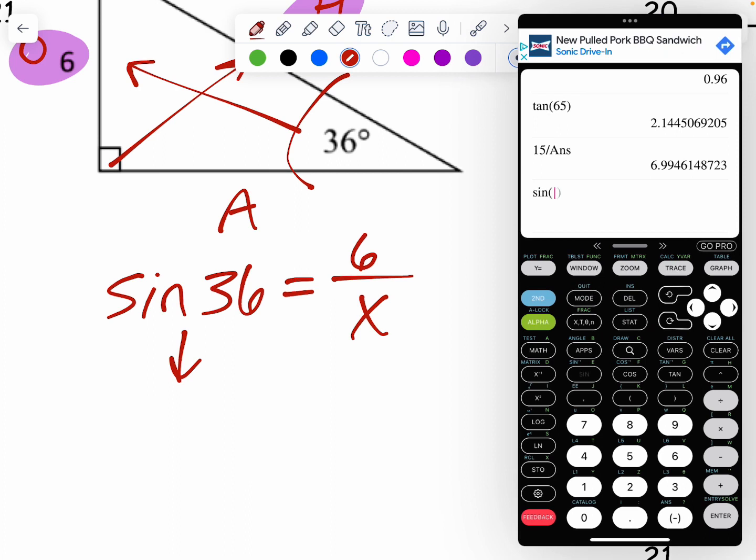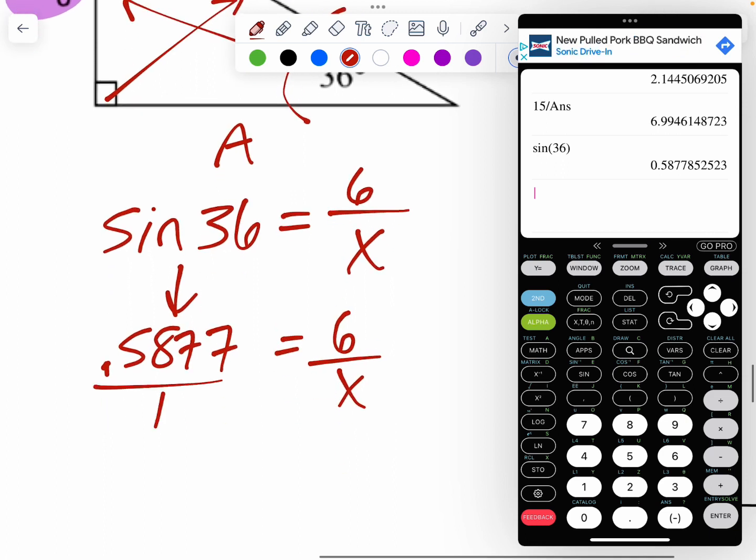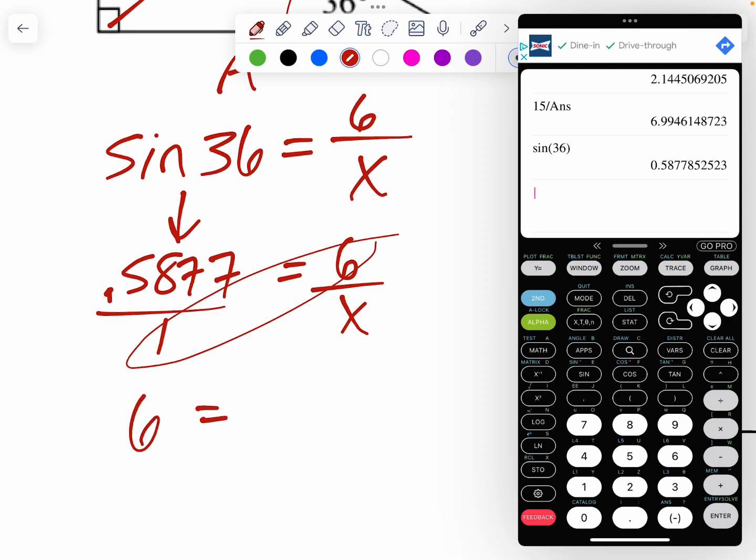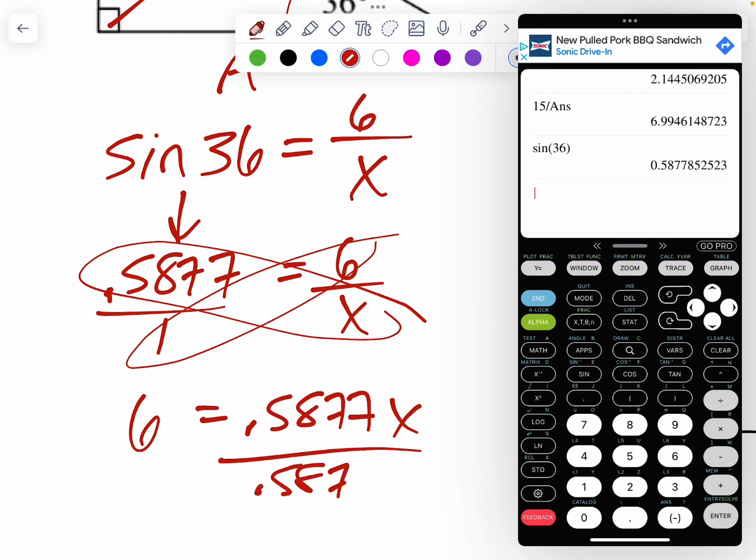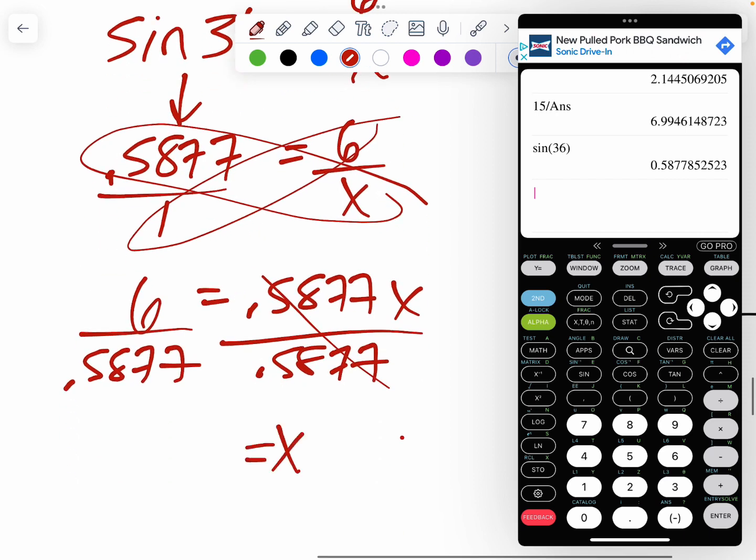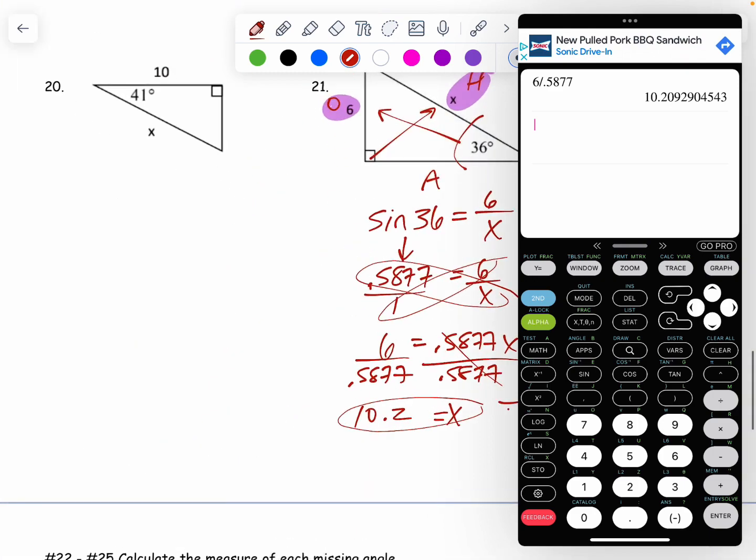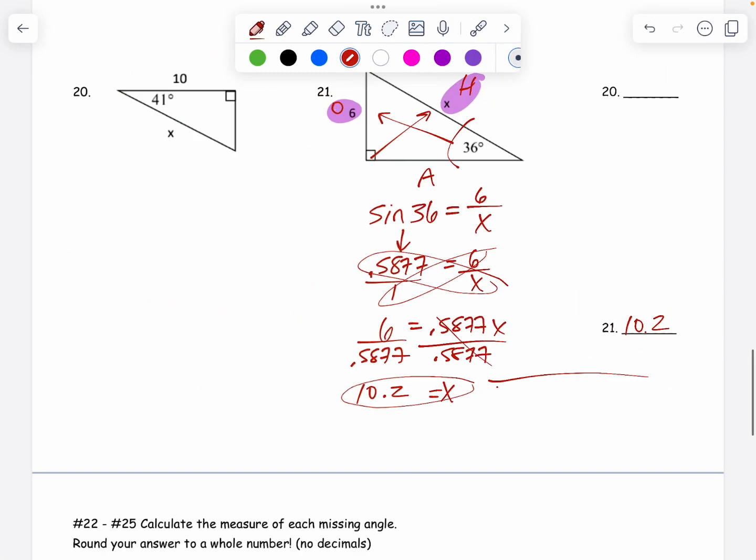I am going to type that into the calculator. Sine 36. I'm going to cut off four decimal places. And again, I'm going to cross multiply this. I've got 6 times 1, which is 6. I've got 0.5877 times X. And I'm going to divide. And I end up with X equals 6 divided by 0.5877, which is 10.2. The 0 does nothing to the 2, so it stays 10.2. I'm going to put 10.2 and I'm going to move on to the last section, number 23.